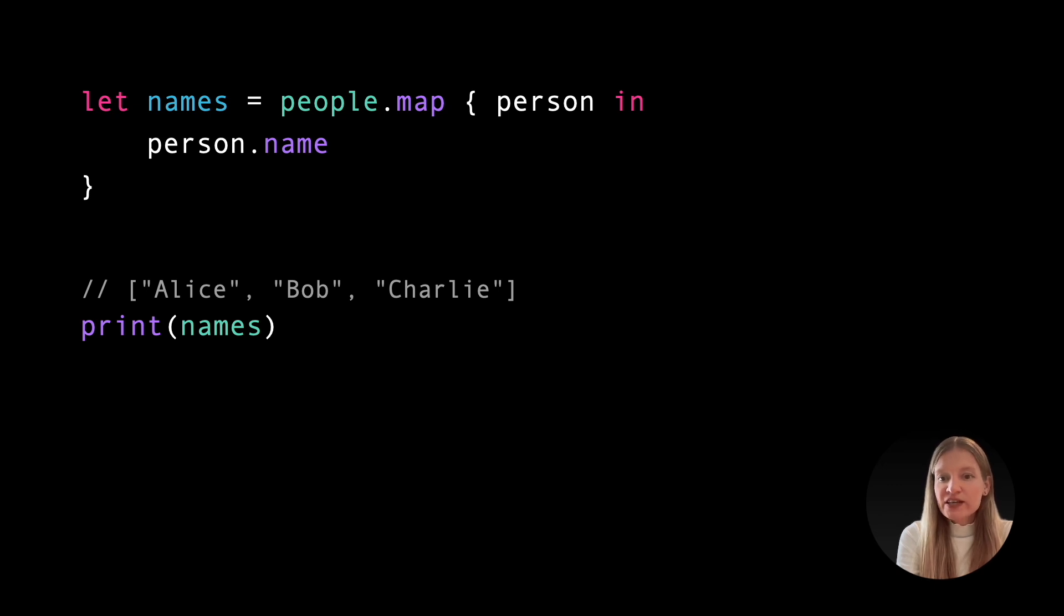In such cases, we can write it more concisely by passing the key path directly. Starting with Swift 5.2, key paths can be used more dynamically, including the ability to be automatically converted into functions. When passed to map, Swift treats the key path as a function that extracts the name from each person in the array. This approach isn't just shorter—it also more clearly conveys our intent. When we use key paths this way, it's obvious that we're not transforming values, we're just accessing a property.